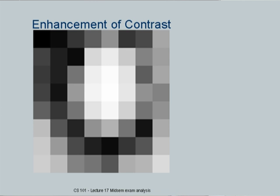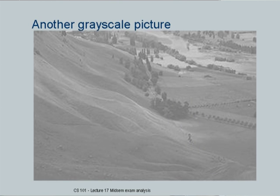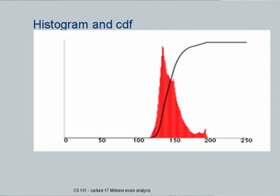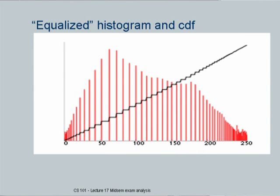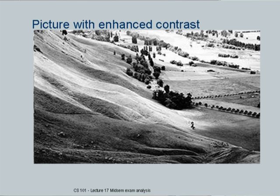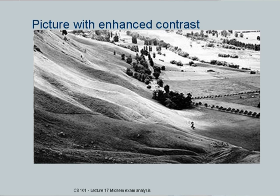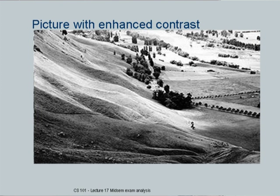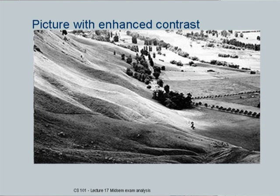Just for good measure, I took another image - a grayscale picture which is actually a scene. I showed them the histogram and CDF, how it is restricted in a small range. Then when I equalize the histogram, how does the histogram and cumulative function look? And then how the actual image looks? And again, if you see the original image and this image - people actually clapped.